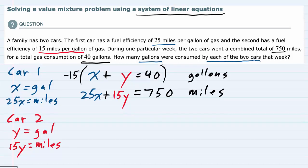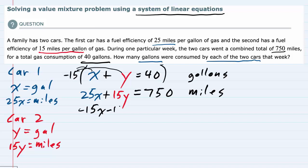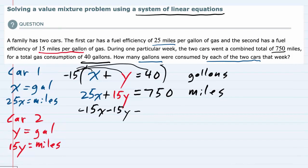The reason I'm doing that is so that the y's cancel. When I distribute, negative 15 times x is negative 15x, negative 15 times y is minus 15y, and negative 15 times 40 equals negative 600. We chose negative 15 so that when I add the equations,